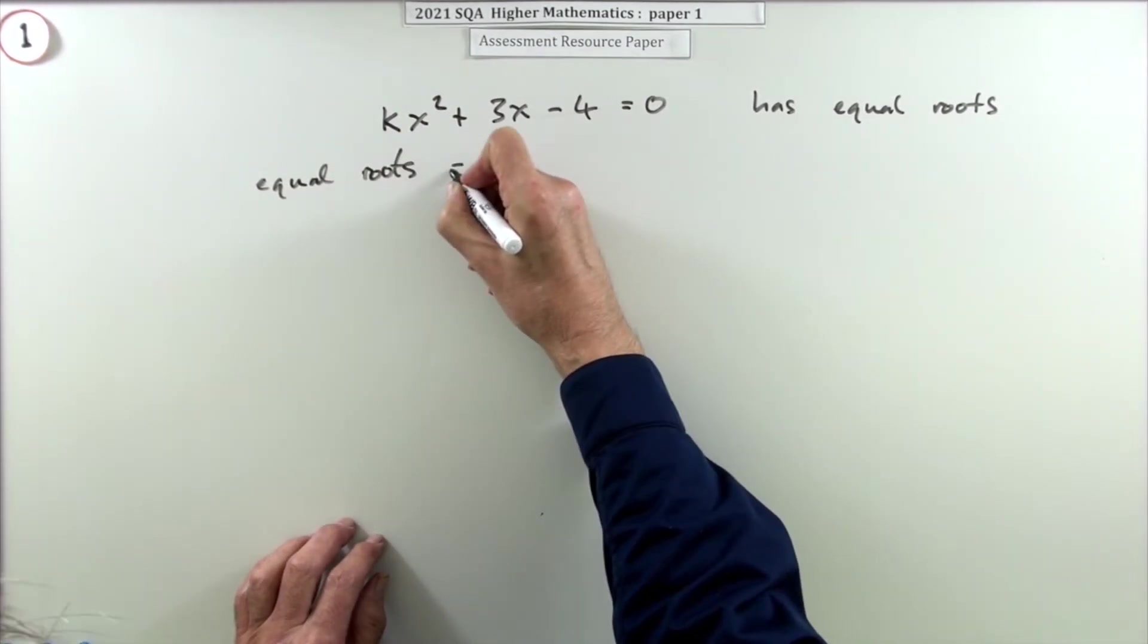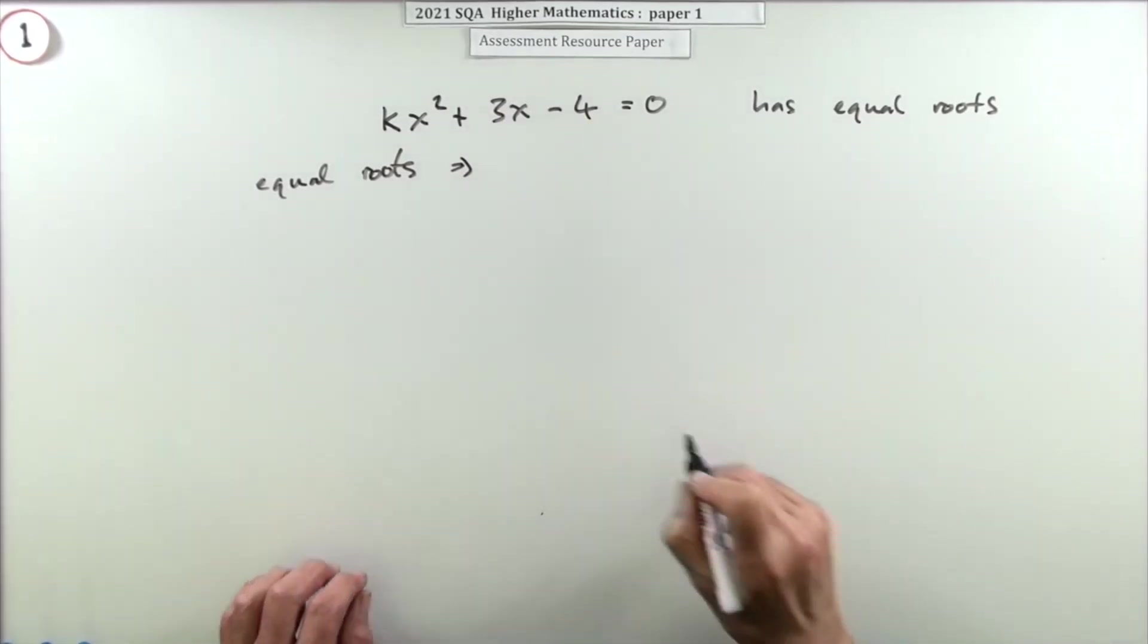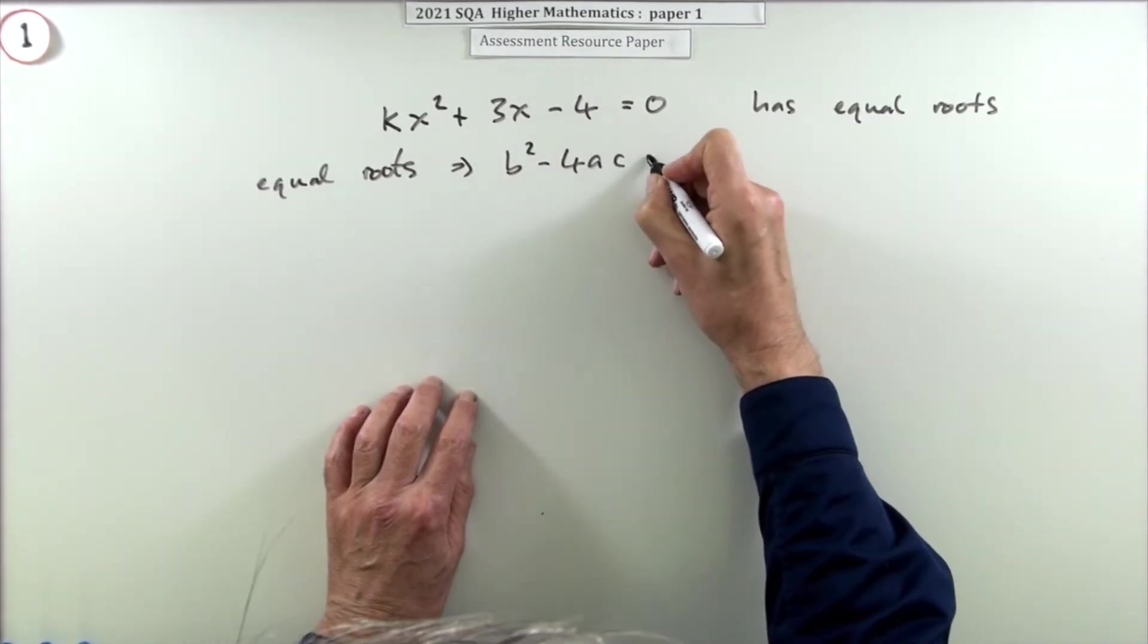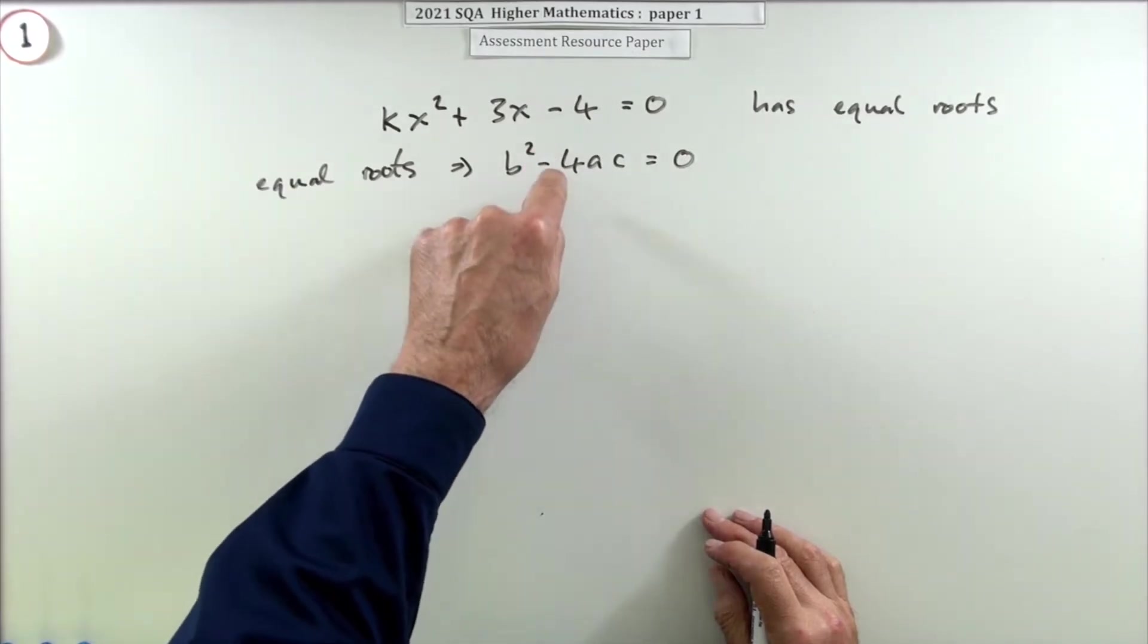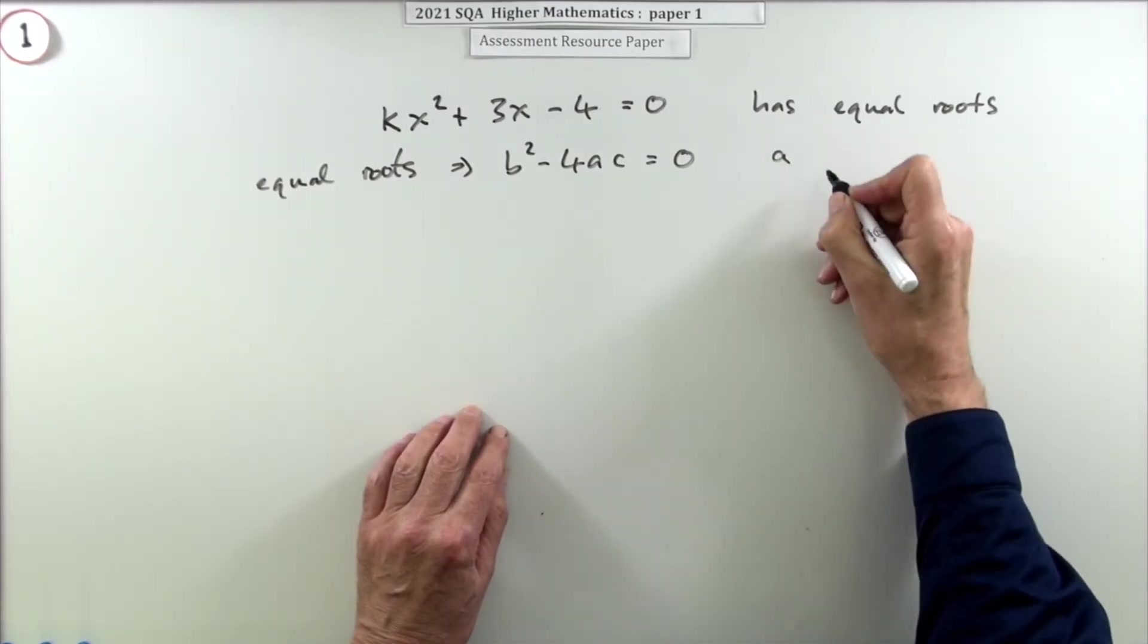So for this one, for equal roots, I'll just put a wee note. Equal roots - the condition for that would be the discriminant would equal zero. So I could put a little delta symbol for discriminant, but I'll just write it out in full: b² - 4ac should equal zero.